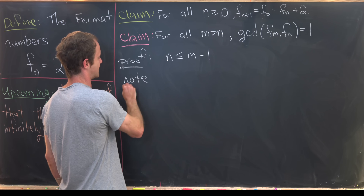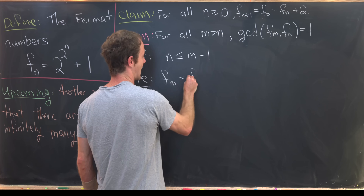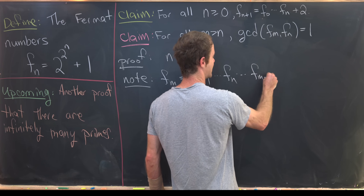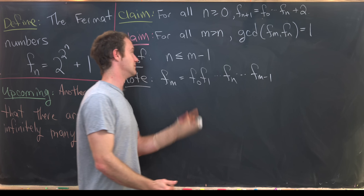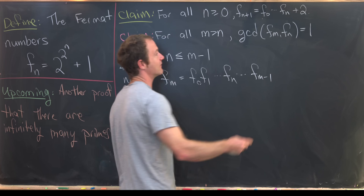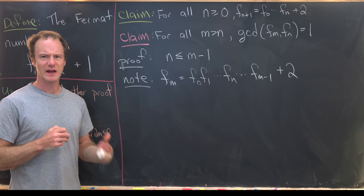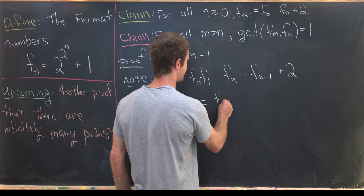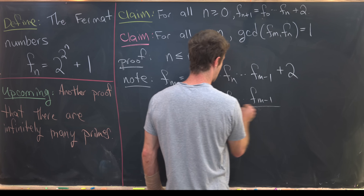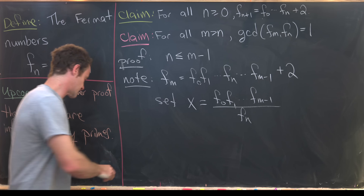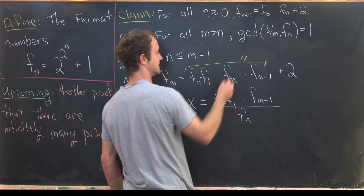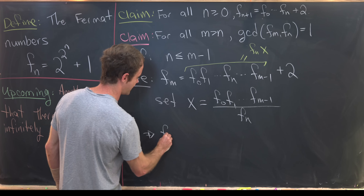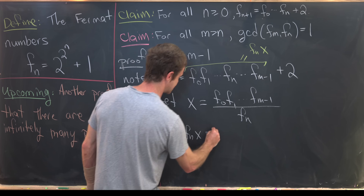Since m is greater than n, we know n is less than or equal to m minus 1. Applying the multiplicative recursion to F sub m, we can rewrite F sub m as F0 times F1, with F sub n somewhere in the middle, up to F sub m minus 1, plus 2. We introduce x as the product F0 times F1 through F sub m minus 1, divided by F sub n, so that product equals F sub n times x.